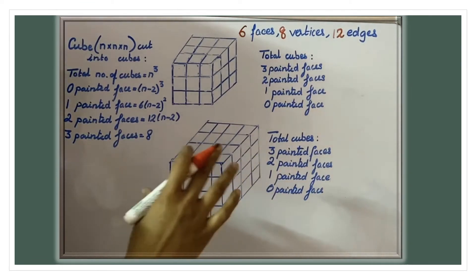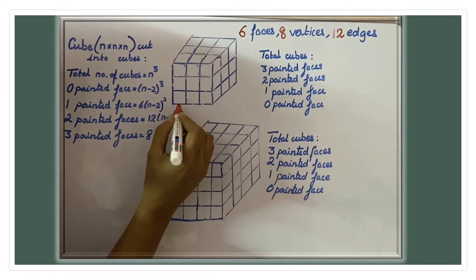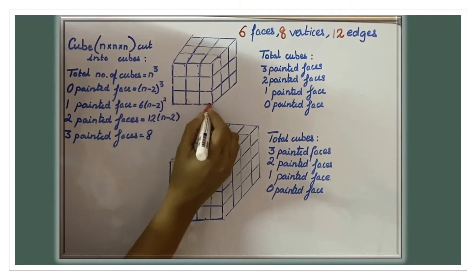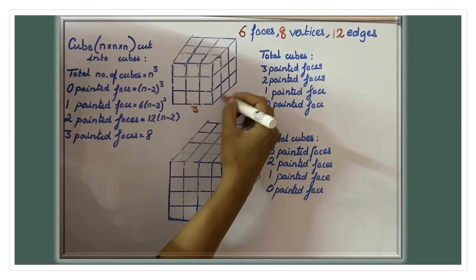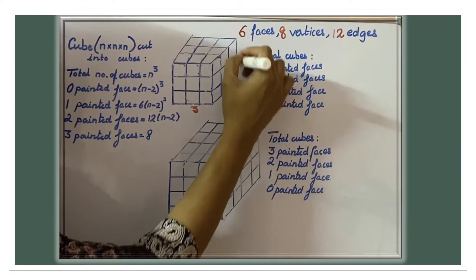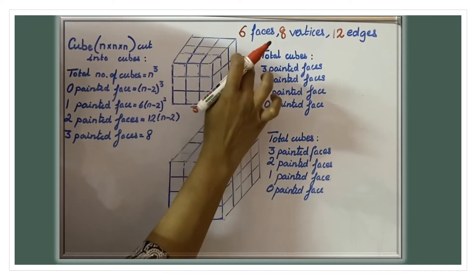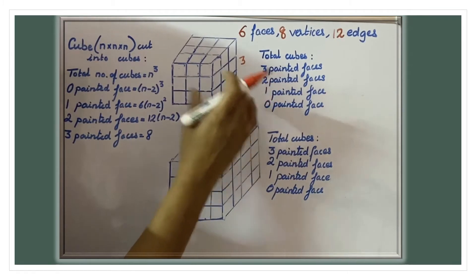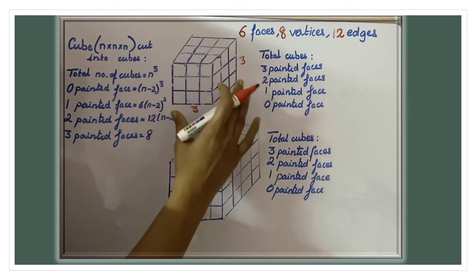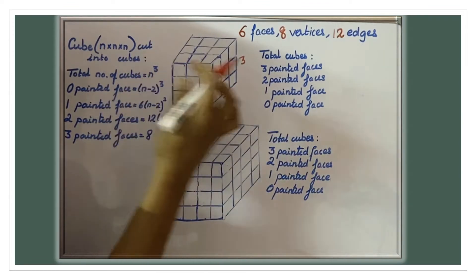If a cube is cut into smaller cubes, let's take this one here. It has length three, width three, and height three — so this is a three by three by three cube. If we cut this cube into smaller pieces, the total number of smaller cubes we get is n cubed, where n is three, giving us twenty-seven smaller cubes.